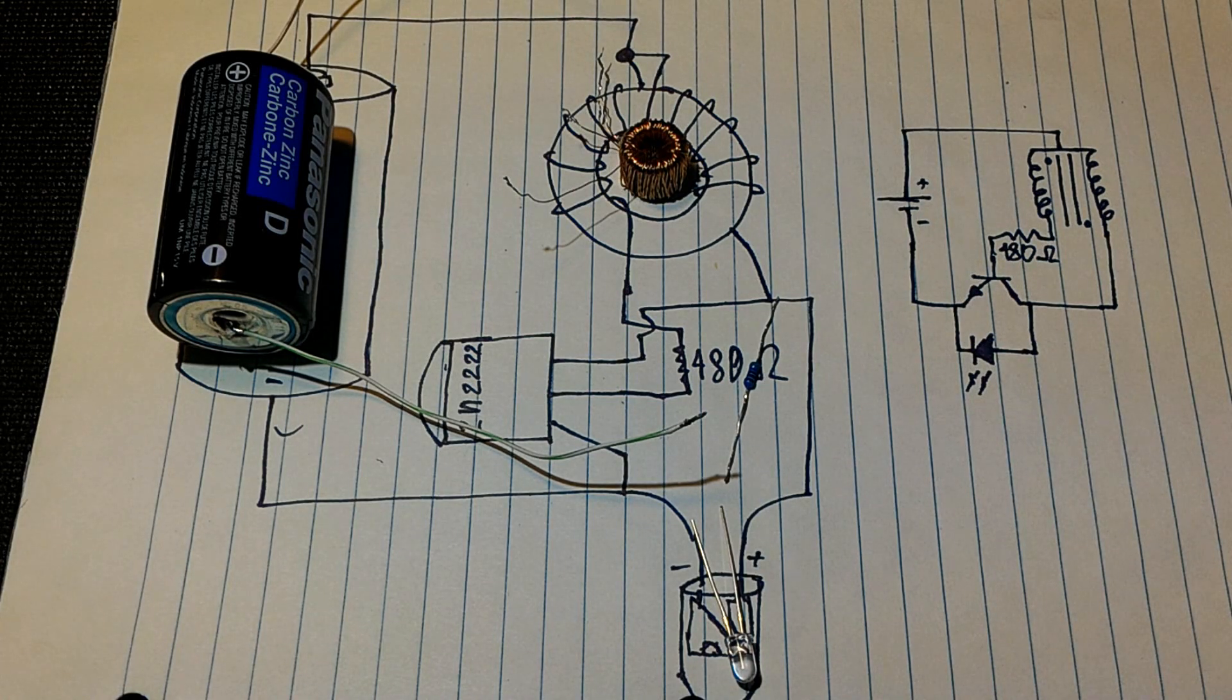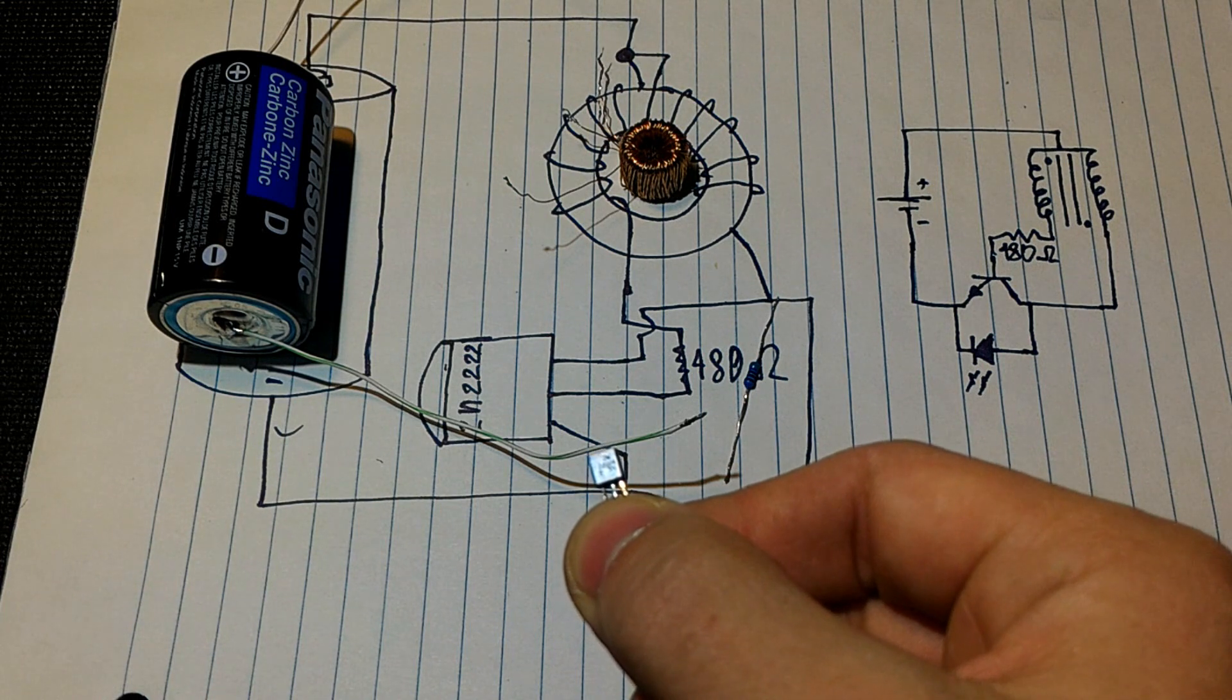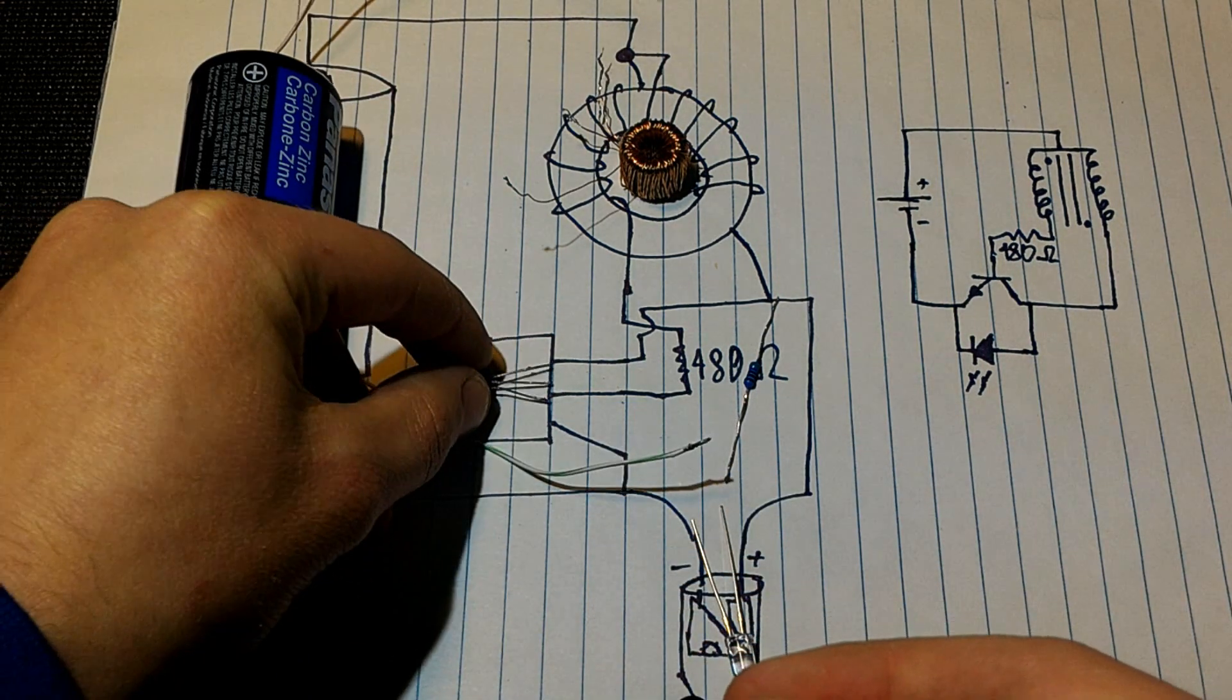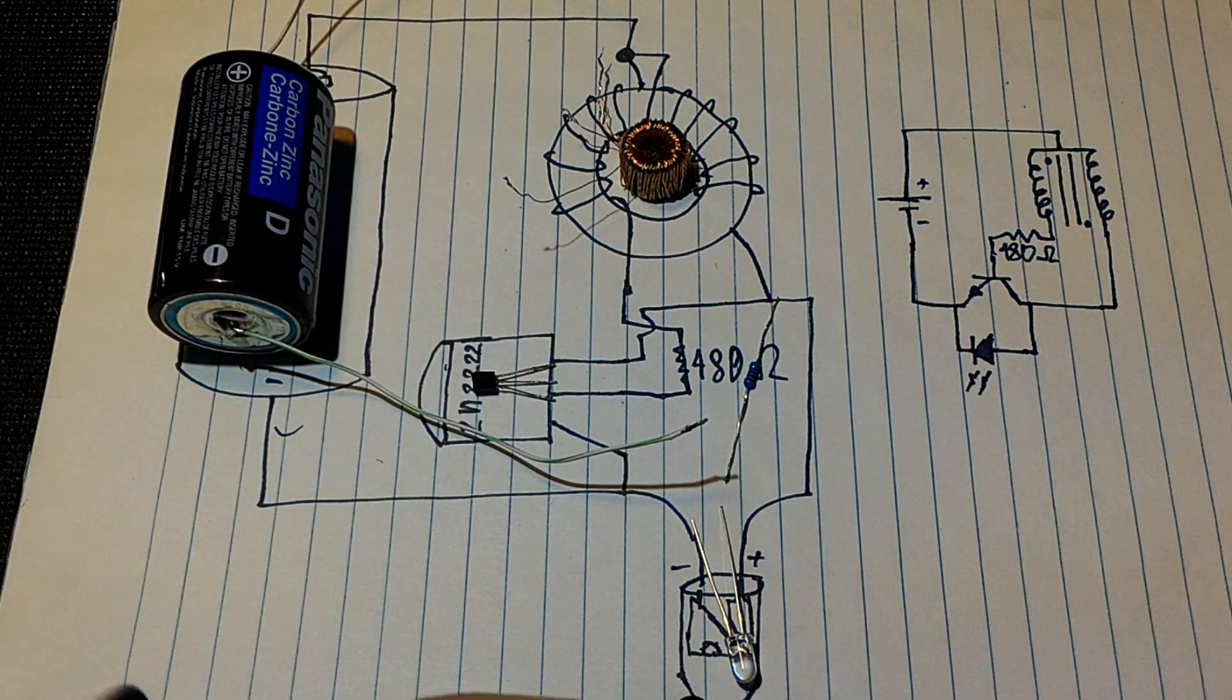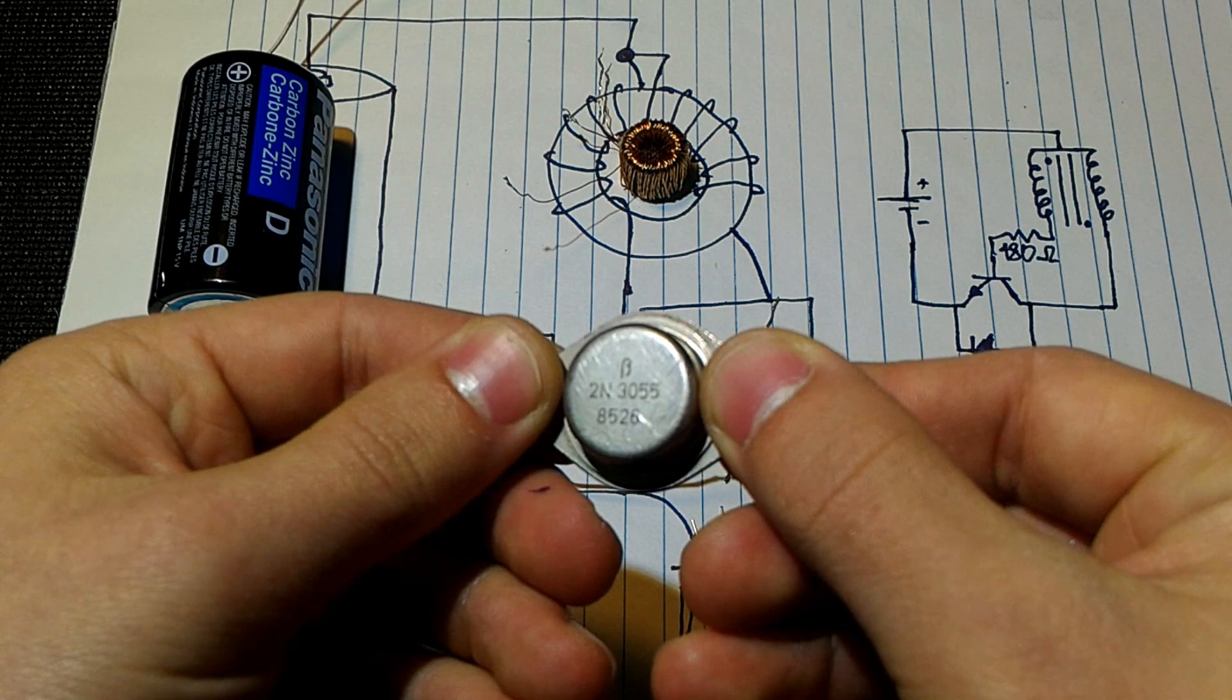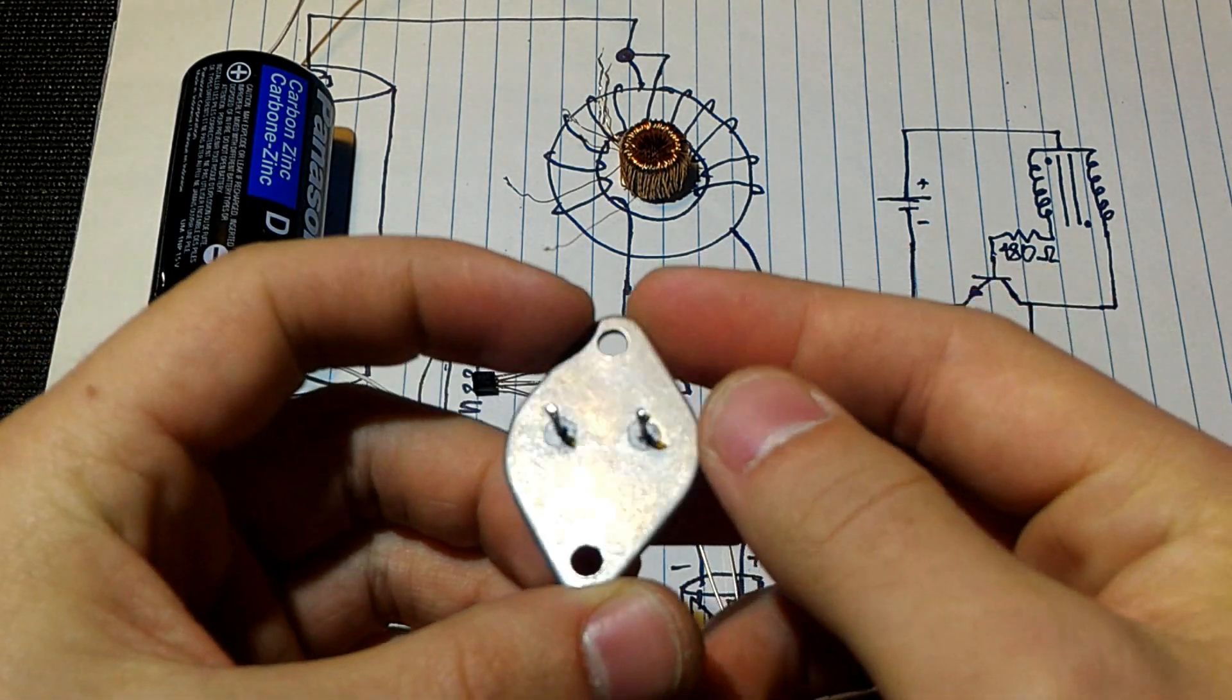So we are using 2N2222 transistor. A very basic one. You can pretty much find anywhere. Or you can use something bigger. 2N3055 for more higher power applications.